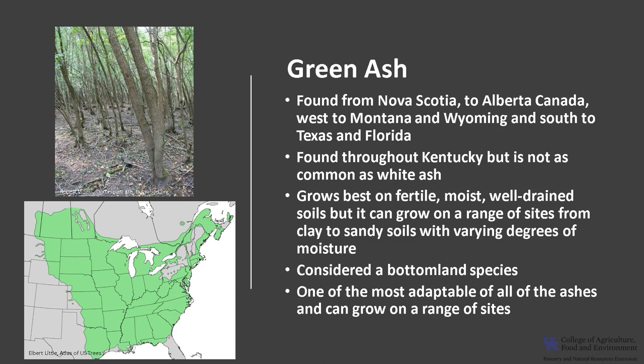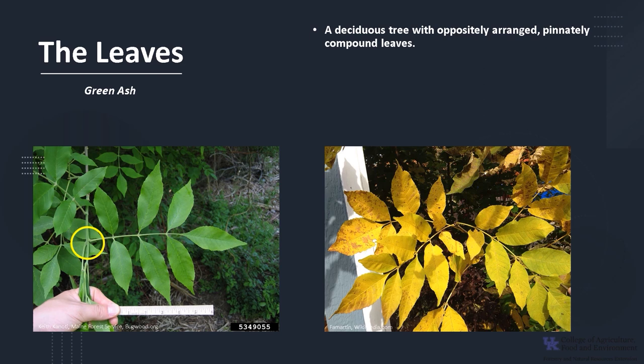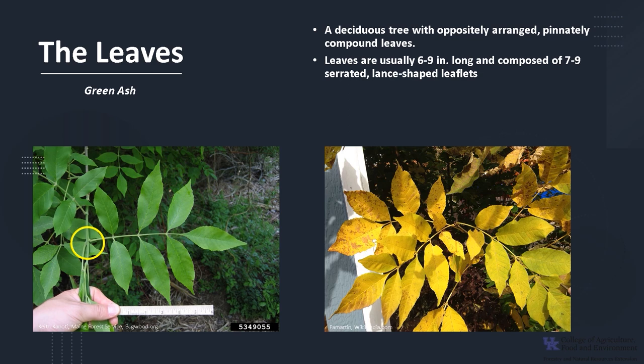Green ash is considered intermediate in shade tolerance. It is a deciduous tree with oppositely arranged pinnately compound leaves, and one of the four groups of trees in Kentucky with oppositely arranged leaves: the maples, ashes, dogwoods, and buckeyes. If you can remember the mnemonic MAD Buck, you can remember the trees with oppositely arranged leaves in Kentucky. The leaves are usually six to nine inches long, composed of seven to nine serrated lance-shaped leaflets, green above and glabrous to silky pubescent below. Autumn color is typically yellow and most attractive.